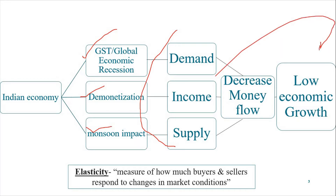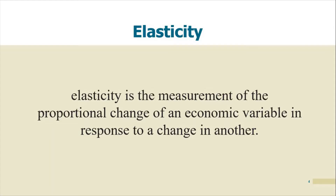These three things led to changes in the market. When the market condition changed — when I decreased the supply of money and the supply of commodity inputs — that changed how buyers and sellers respond. Buyers decreased their demand and sellers decreased their supply. This is where elasticity comes in, measuring how market participants respond to changes in market conditions.